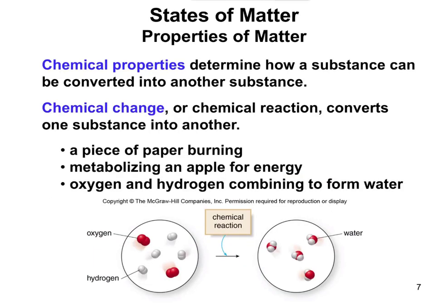Chemical properties determine how a substance can be converted from one thing into another. Looking at the reactions shown, you have oxygen — the O2 molecule, two oxygens together — and H2, two hydrogens together. These are both gases that eventually collide. A chemical reaction can occur where you form water, H2O. You're breaking bonds and making new bonds — that's what we call a chemical reaction or chemical change. You're converting O2 and H2 into H2O, which are different chemicals. Another example: when your body digests an apple, it doesn't stay an apple — you convert and metabolize it to energy.